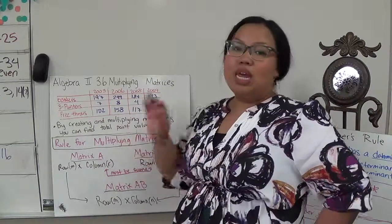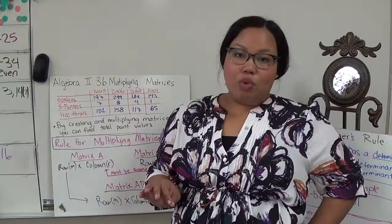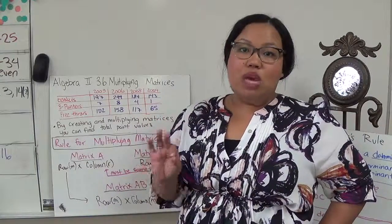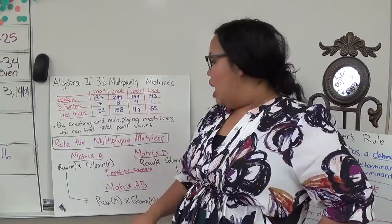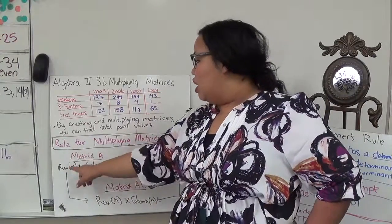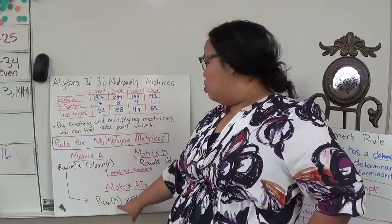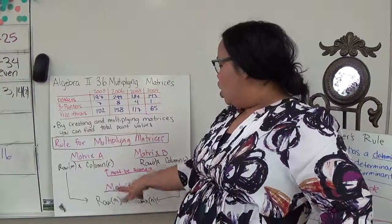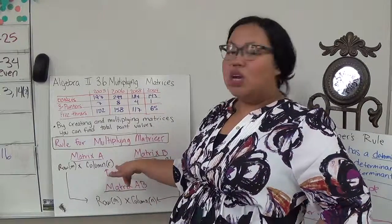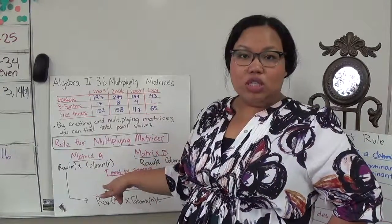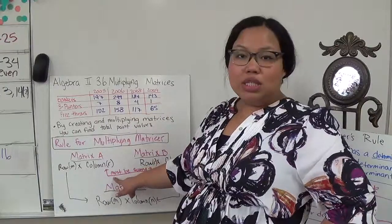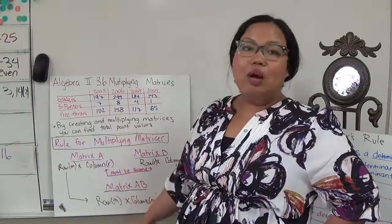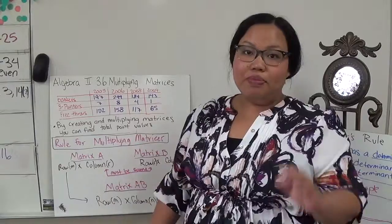Once these are the same, I can go ahead and multiply. When I do multiply, I'll have a new dimension of matrices. That is found by how many rows there are in matrix A and how many columns are in matrix B — the leftover outer values. So the insides have to be the same in order for them to multiply, and the outsides tell me the new dimension.